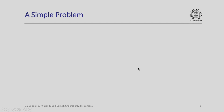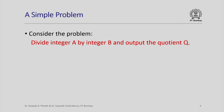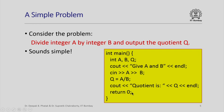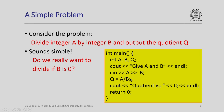Let us look at a simple problem and why executing instructions in a linear sequence may not be the best way to solve it. Suppose I want to divide the integer a by the integer b and output the quotient q. Here is a program that could do this: declare three integer variables a, b, and q; get inputs a and b; compute the quotient; output it; and return 0. The problem is what would happen if b was 0 — we would effectively be doing a division by 0, which is not a well-defined operation.